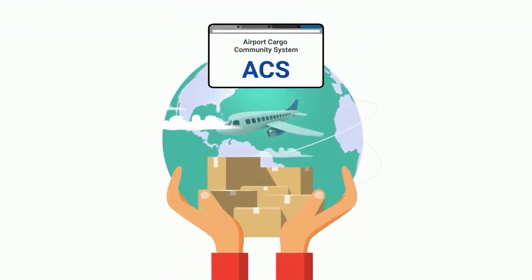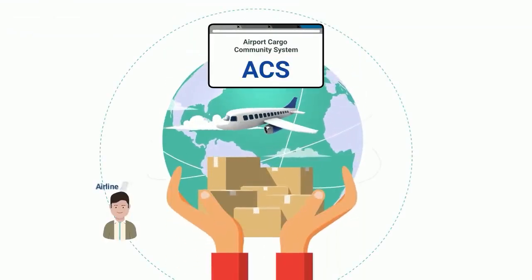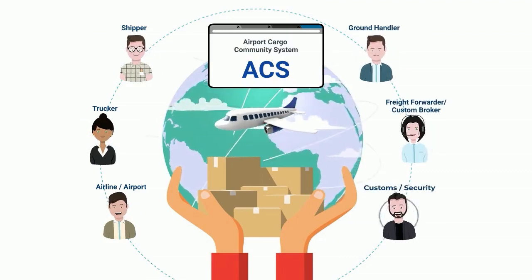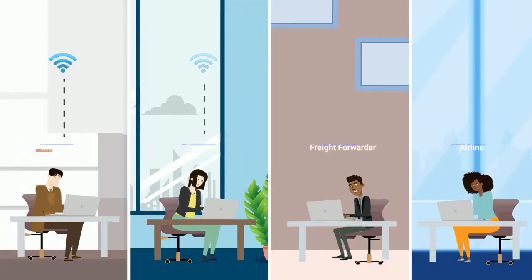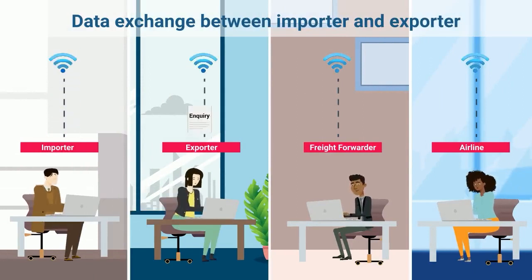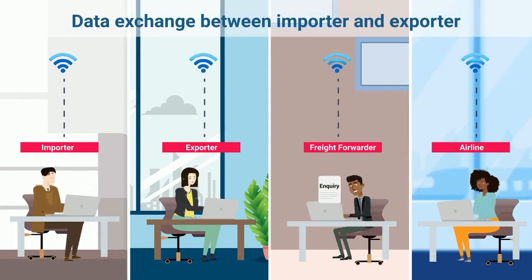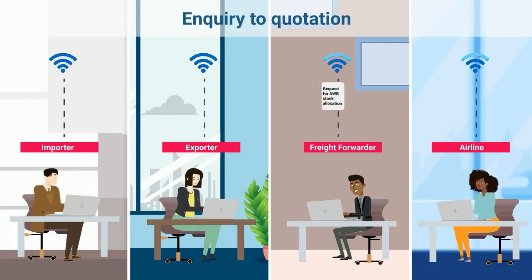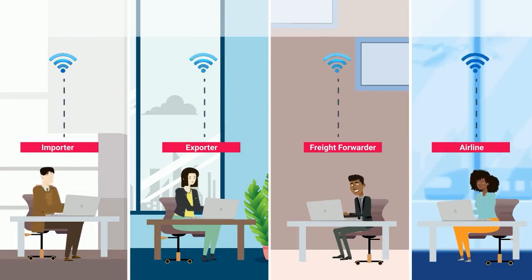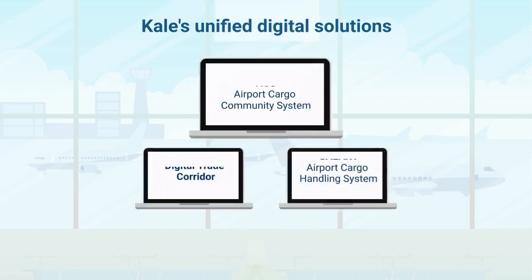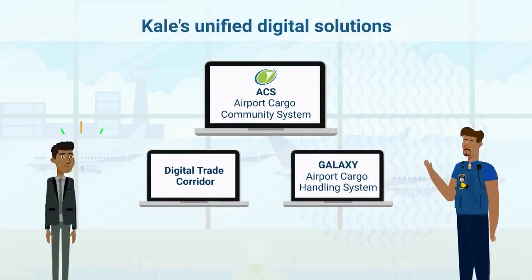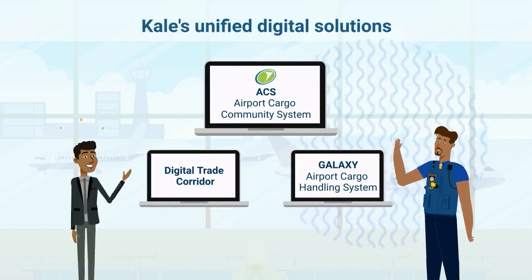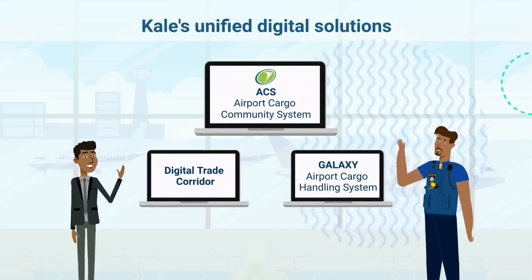Air Cargo Community System is a unified platform to connect all stakeholders of the air cargo ecosystem. This holistic cloud platform handles end-to-end air cargo operations from inquiry to quotation, with all parties exchanging information and documents digitally on a real-time basis. Kale's pioneering solutions on cargo community systems and business process automation is a perfect combination for air cargo to revolutionize its growth and customer centricity.